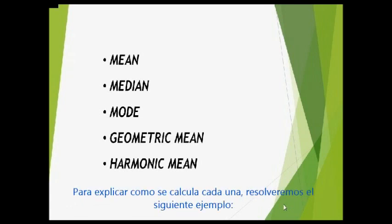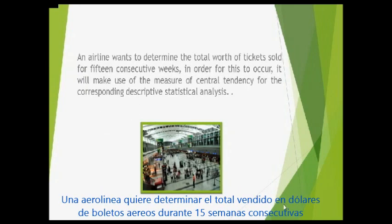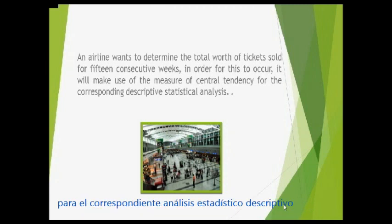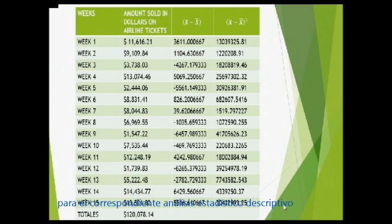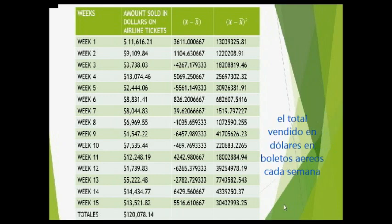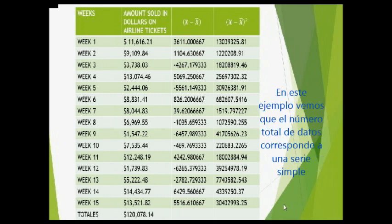To explain how these are calculated, we will solve the following example. An airline wants to determine the total worth of tickets sold for 15 consecutive weeks. In order for this to occur, it will make use of the measures of central tendency for the corresponding descriptive statistical analysis. The airline provides the following information, which includes the amount sold in dollars on airline tickets every week. In this example, we see that the total numbers of data correspond to a simple series.